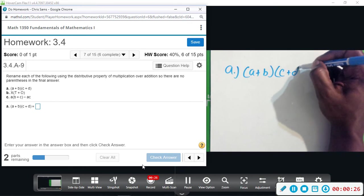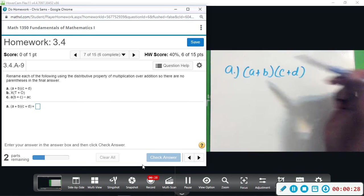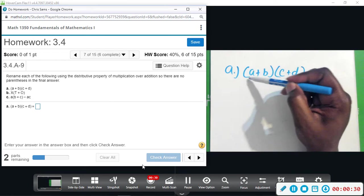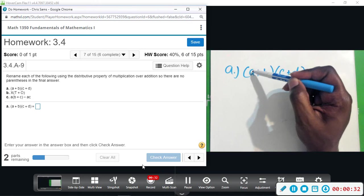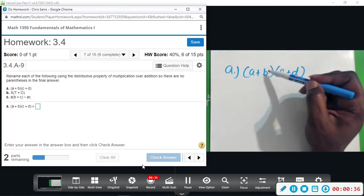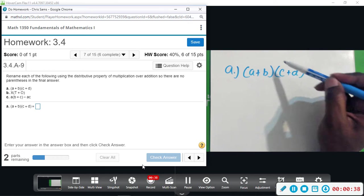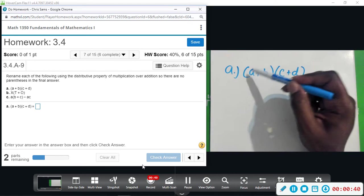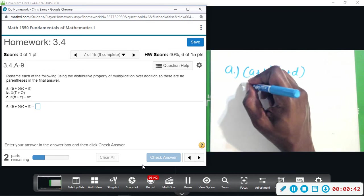When you distribute, they call it the FOIL method. You're going to take everything in the first parentheses and multiply it times C and D. I'm going to do that for both a and b, so I'll start with a multiplied with C and with D.